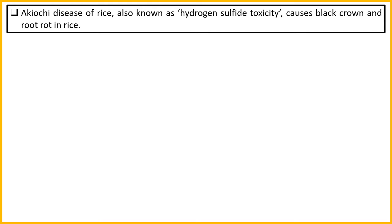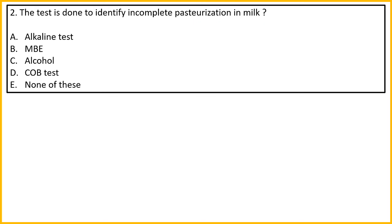It is called Hydrogen Sulphide toxicity. The crown of rice turns dark, and the roots also develop a rotting problem. These are the diagnostic symptoms of this disease.